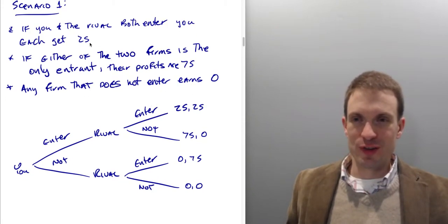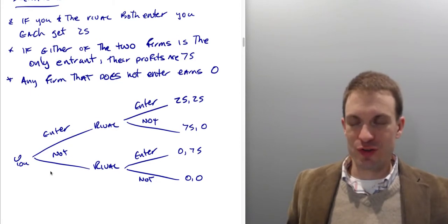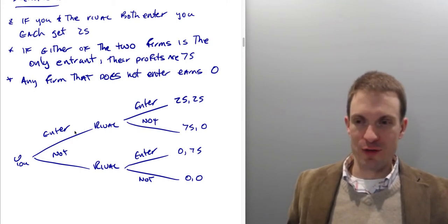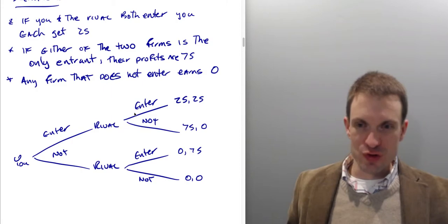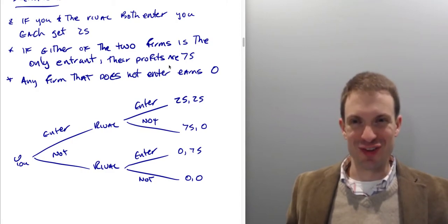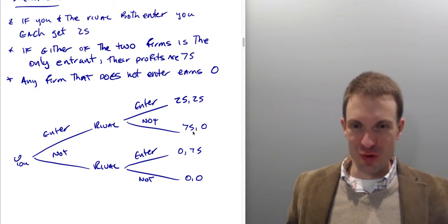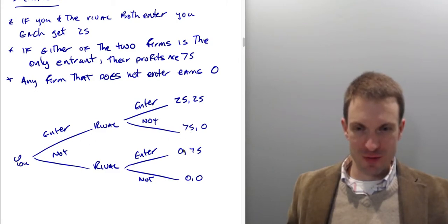So scenario one, if you and the rival both enter, you each get $25,000. If either of the two firms is the only entrant, their payoffs are $75,000. And any firm that does not enter earns zero. You have two choices: you can enter or not enter. Your rival can enter or not enter.